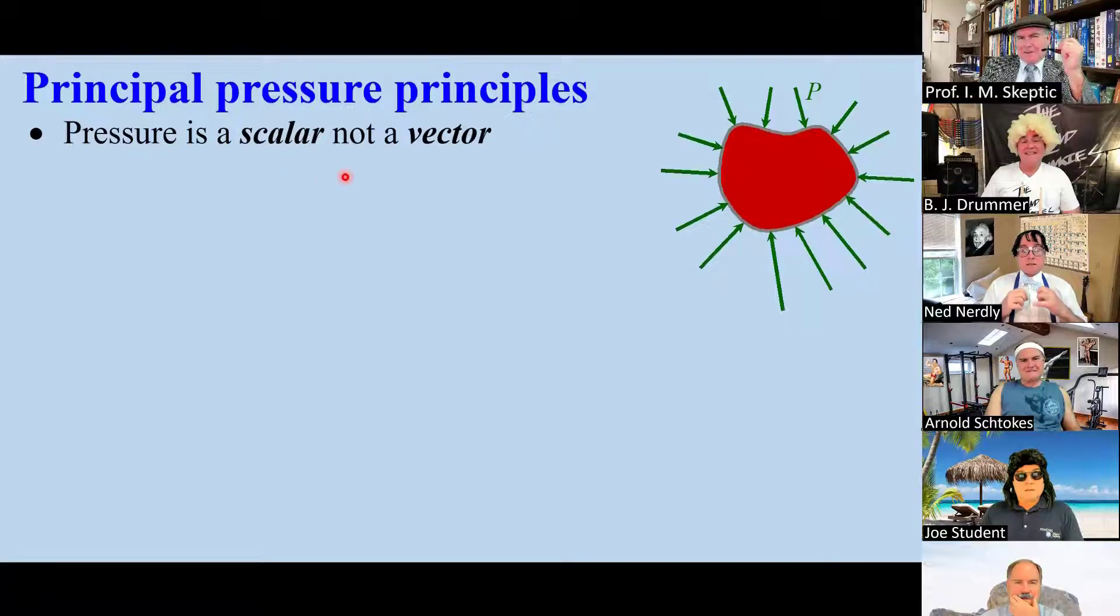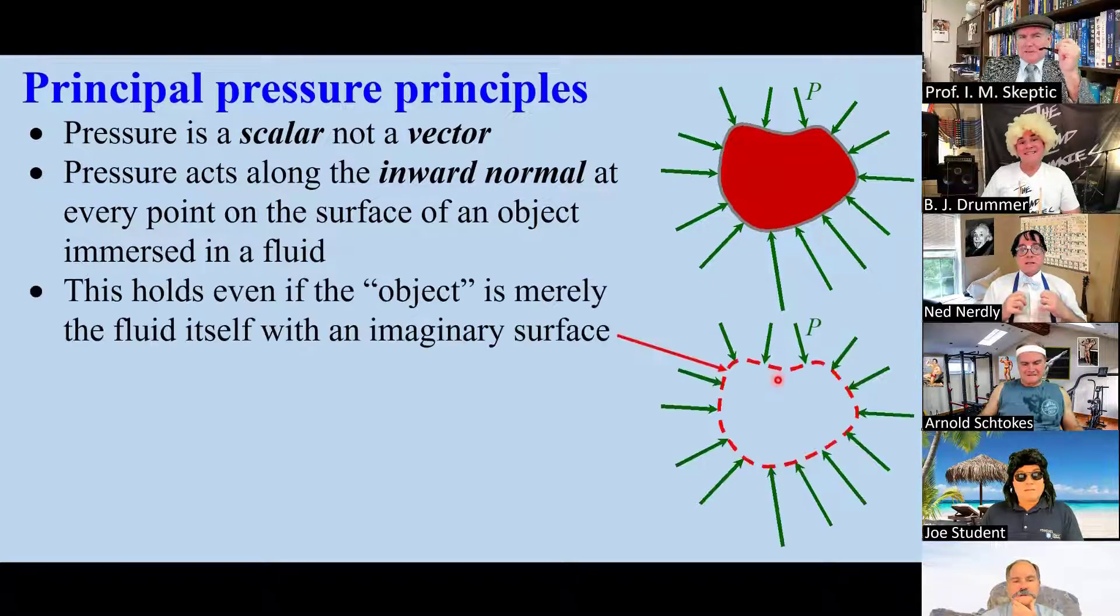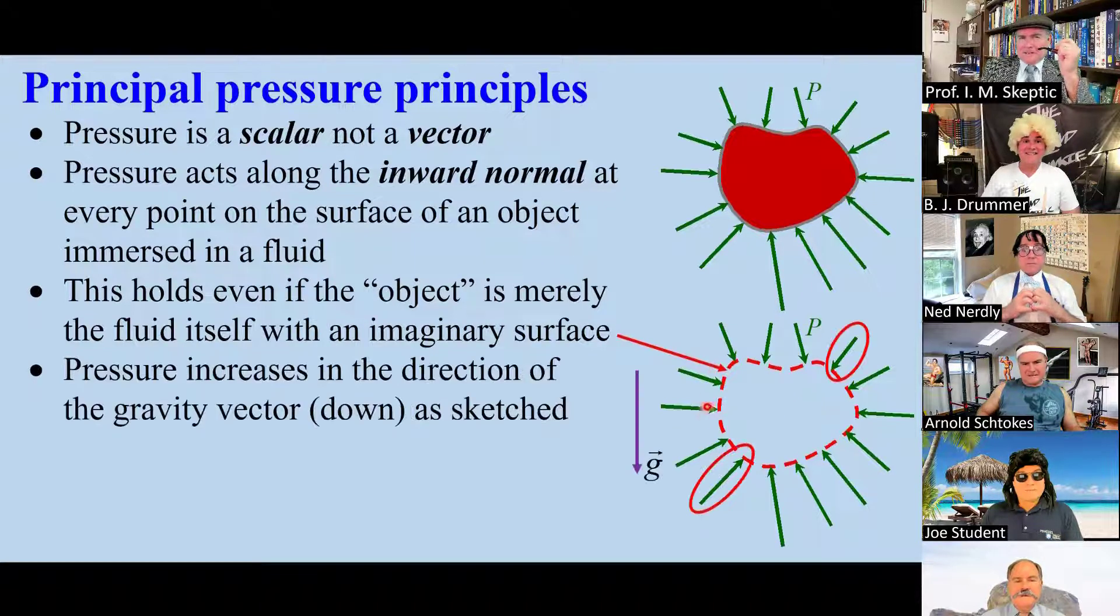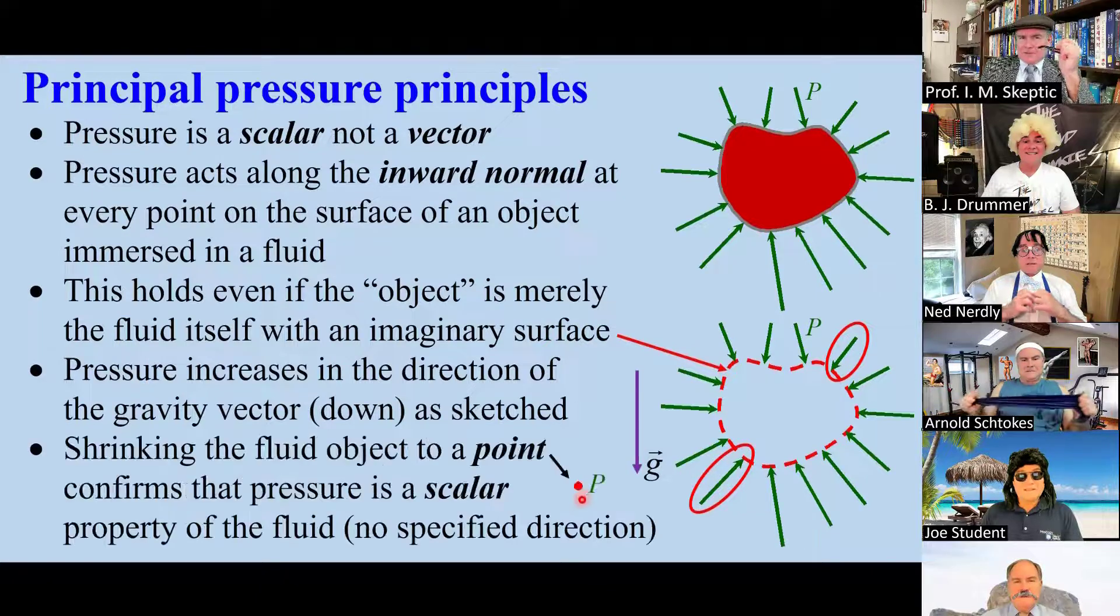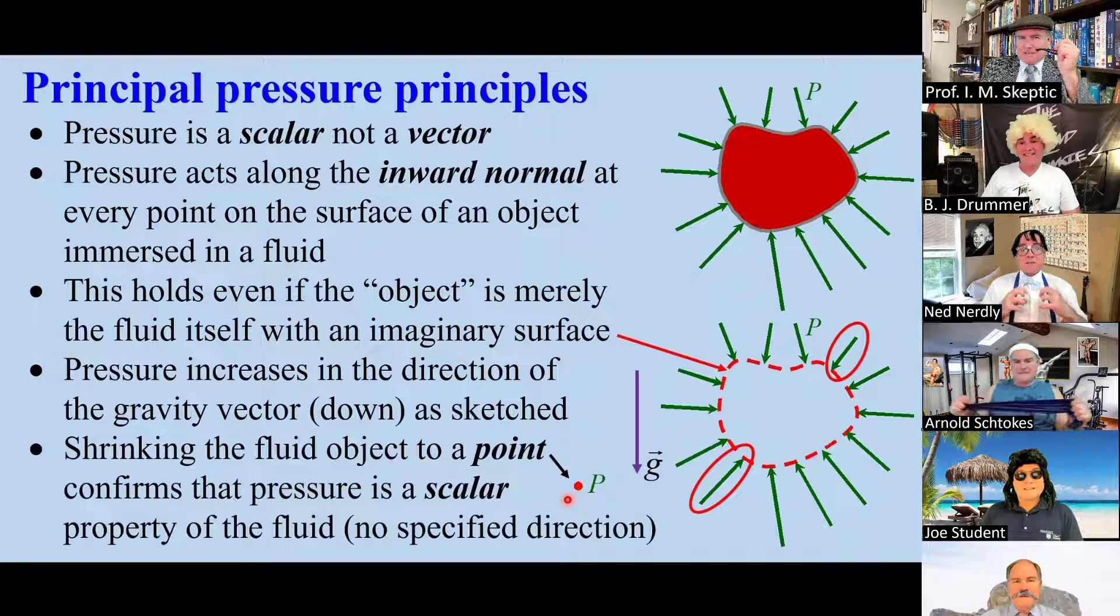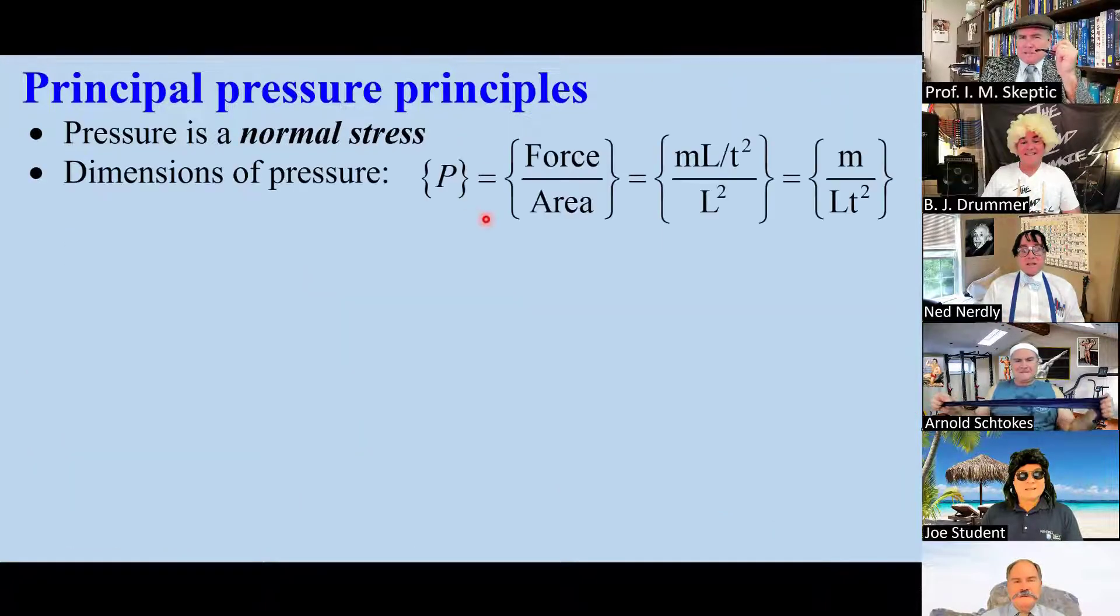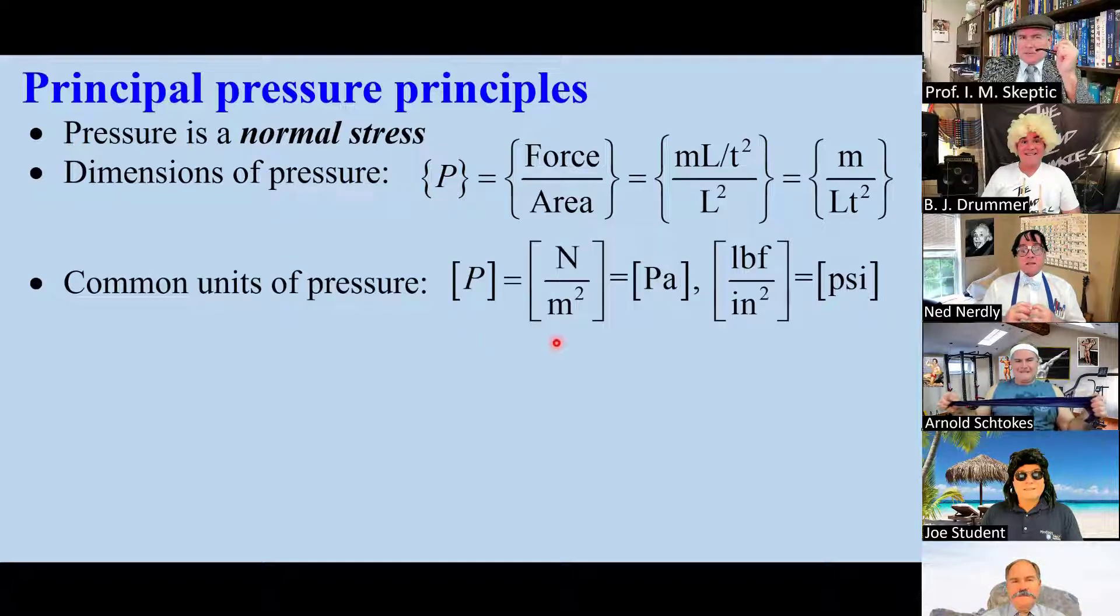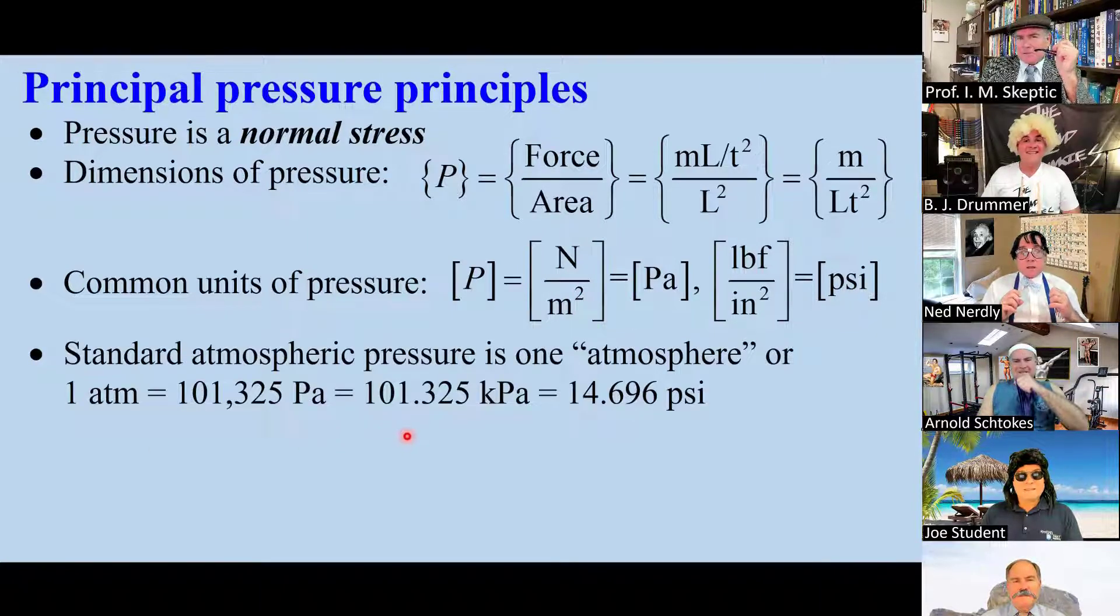Pressure is a scalar, not a vector, but it acts along the inward normal at every point along the surface of an object. This holds even if the object is imaginary and inside is just the fluid. Pressure increases in the direction of the gravity vector, which is down in this case. If you shrink this object to a point, it confirms that pressure is a scalar. Acting at that point, pressure is a normal stress. Its dimensions are force per area, or m over l t squared. Common units of pressure are pascals, which is a newton per meter squared, or an English psi.